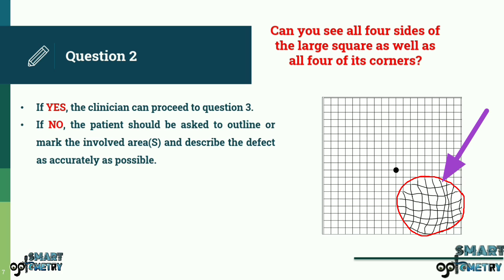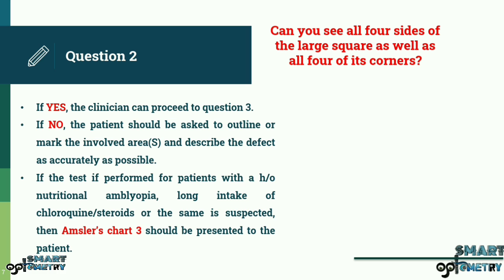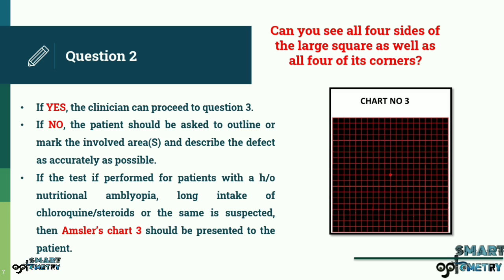This information may greatly assist the clinician in establishing a diagnosis. If the test is performed for patients with a history of nutritional amblyopia, long intake of chloroquine or steroids, or the same is suspected, then Amsler's chart 3 should be presented to the patient.